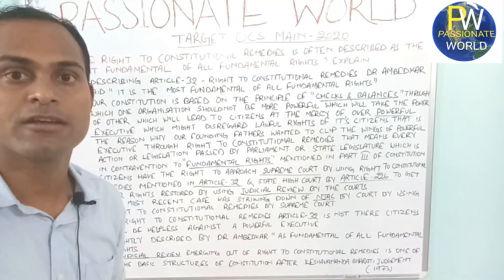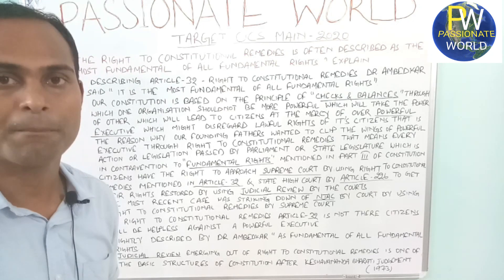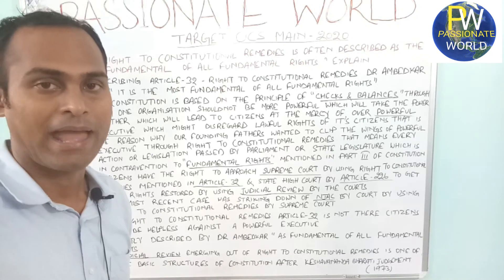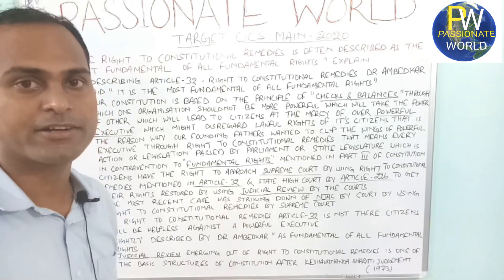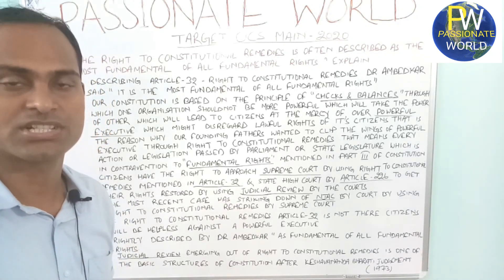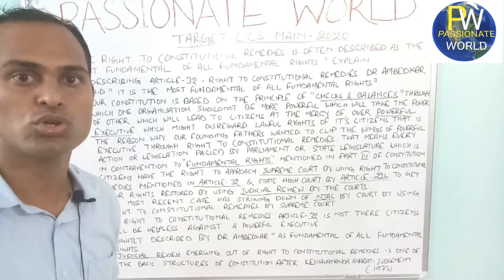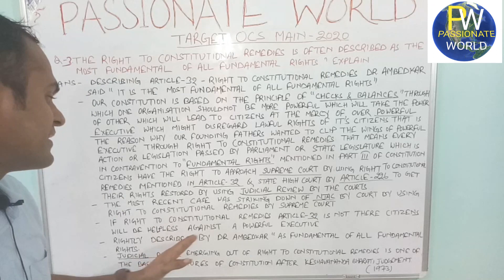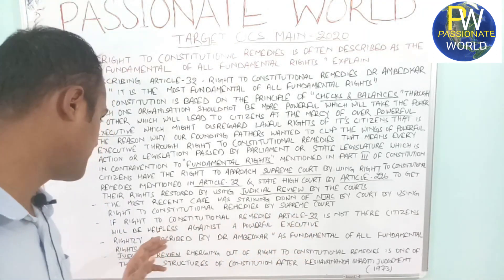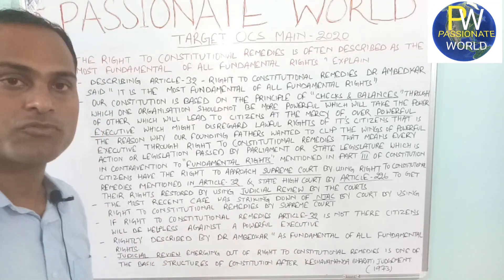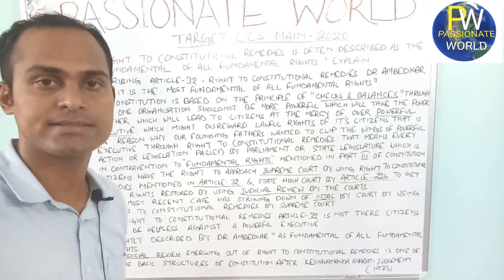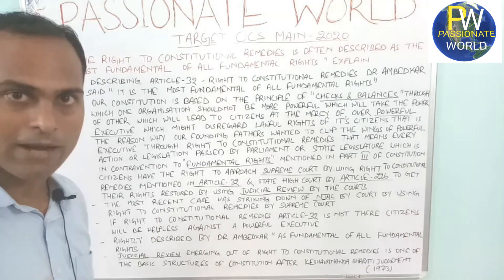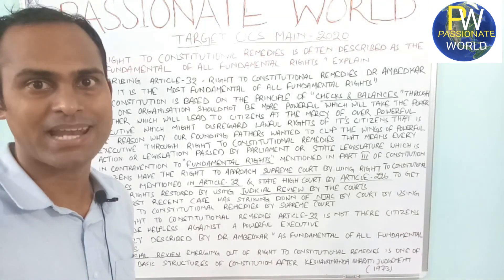Citizens would be very helpless — the government could change rules and take away their rights. Because Article 32 exists, citizens have the right to approach the Supreme Court to restore their own rights. Rightly described by Dr. Ambedkar as the most fundamental of all fundamental rights. Judicial review is one of the basic structures of the Indian constitution after the Keshavananda Bharati judgment 1973.